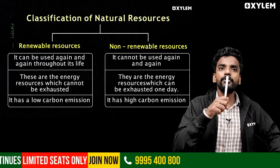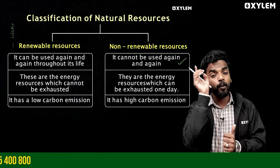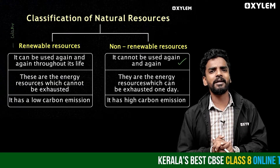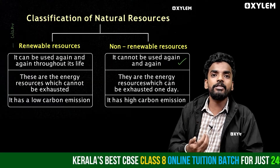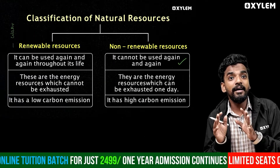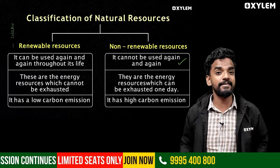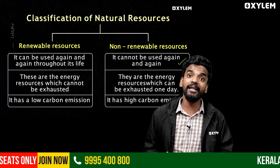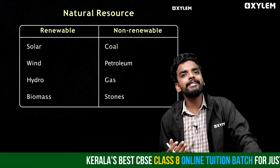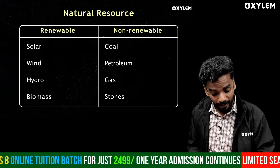The second category is non-renewable resources. These cannot be used again and again — once used, they are gone. They are energy resources which existed in limited quantity. For example, petrol is non-renewable — once you use it, it's over. Non-renewable resources include coal, petroleum, and natural gases. They have high carbon emissions. For examinations: renewable resources are solar, wind, hydro, and biomass; non-renewable are coal, petroleum, and gases.